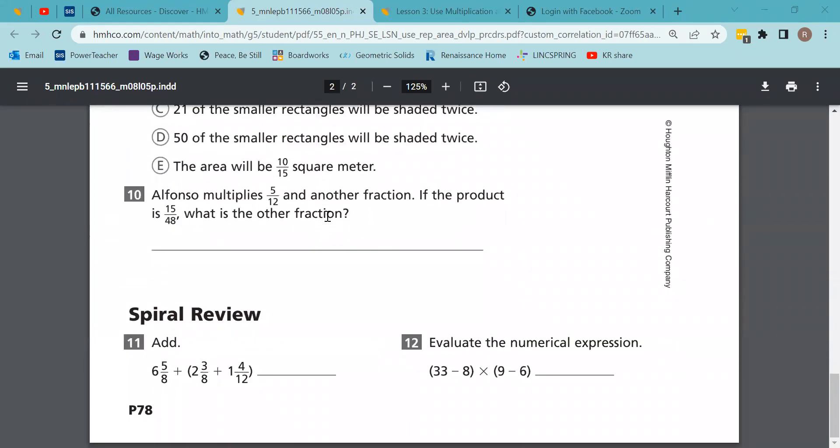Number 10: Alfonso multiplies five-twelfths and another fraction. If the product is 15 over 48, what is the other fraction? This is a bit different than one we've done before. We've got five-twelfths times an unknown equals 15 out of 48. Five times what gives you 15? Five times 3. 12 times what gives you 48? Four. So what's the other fraction? Three-fourths.